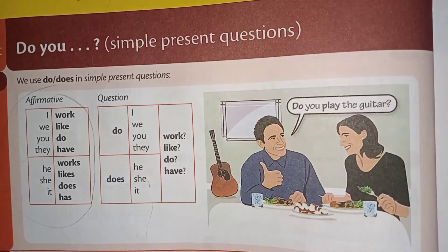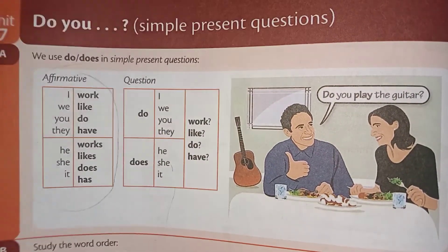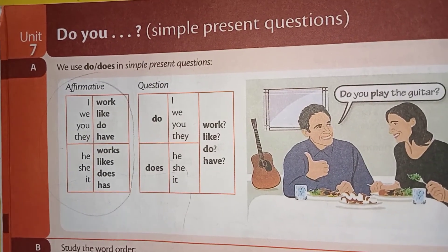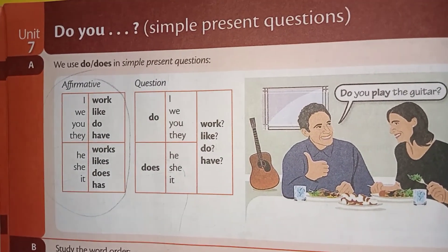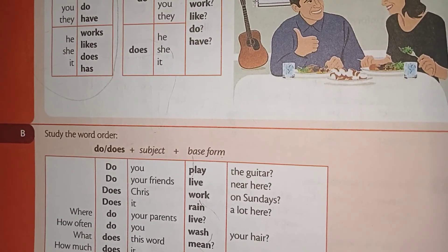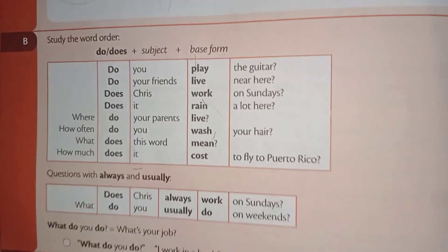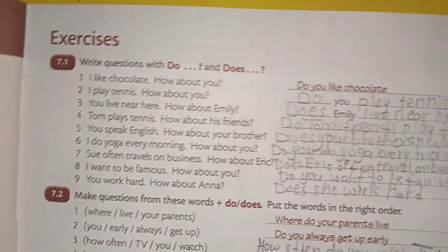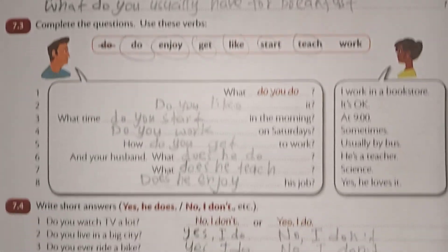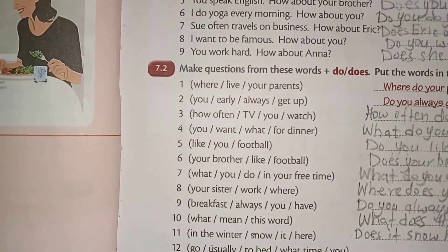In present simple tense we have learnt to make questions and short answers. This is unit 7 of Basic Grammar in Use from Cambridge. I have explained all the example sentences and the pattern, and we have followed these exercises. I hope you have learnt from this unit. Thank you, talk soon.